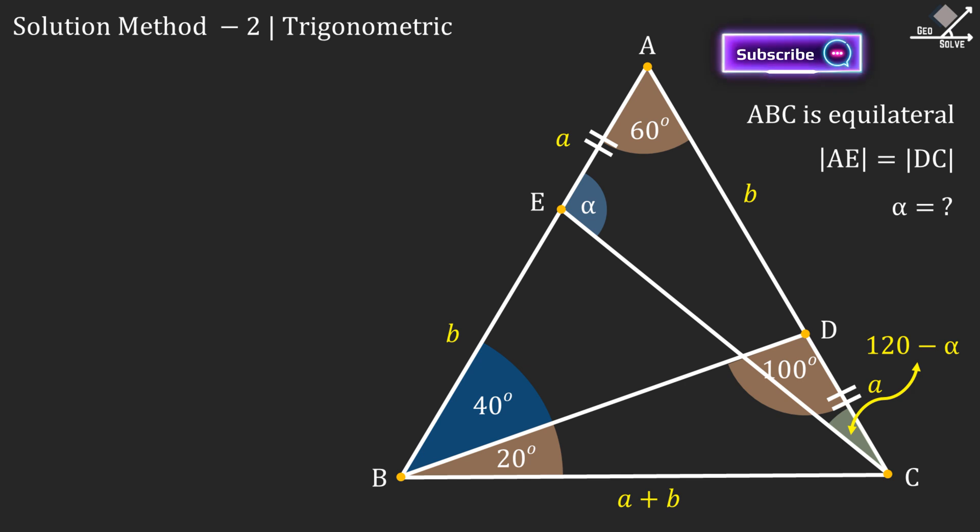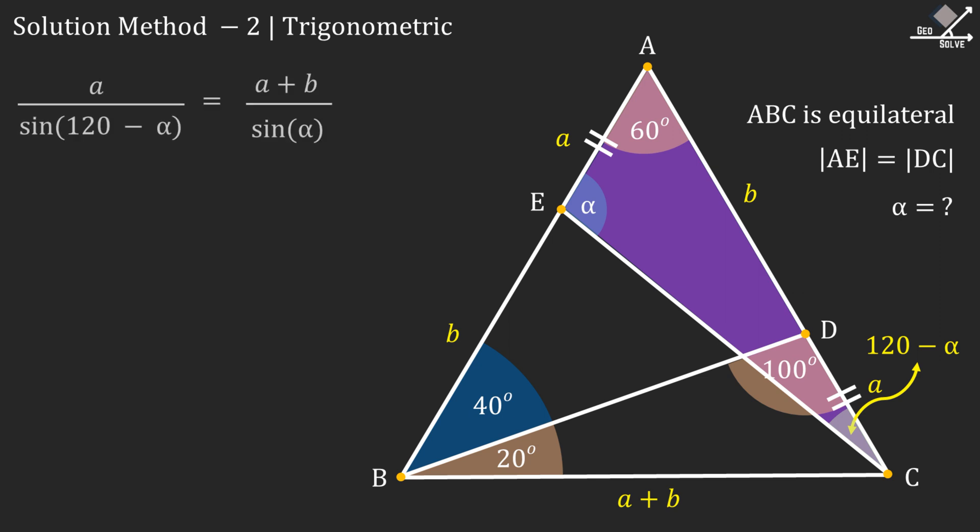First let's call this angle as 120 minus alpha degrees. And then let's apply sine theorem on this shaded triangle. From here we can write the following expression. Let's rearrange the terms and call it equation 1.